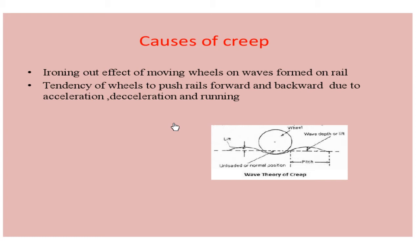This is explained in the percussion theory. In the third theory, that is the drag theory, it states that the backward thrust on the driving wheel of the locomotive has the tendency to push the rail of the track backward. So these are the causes of creep.